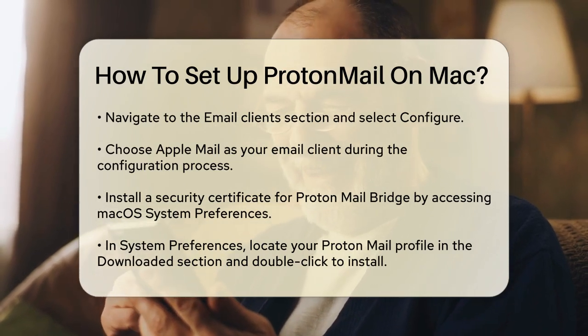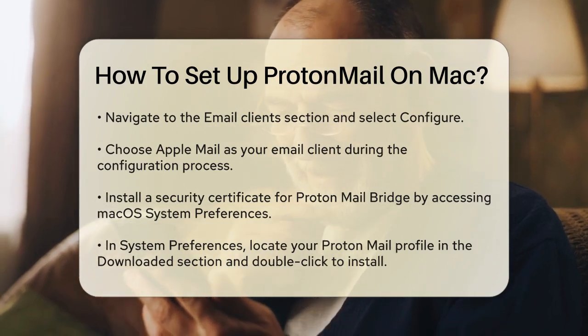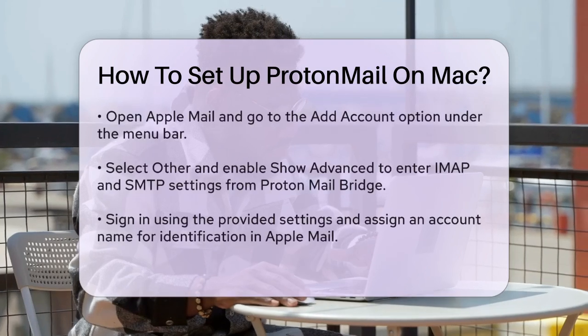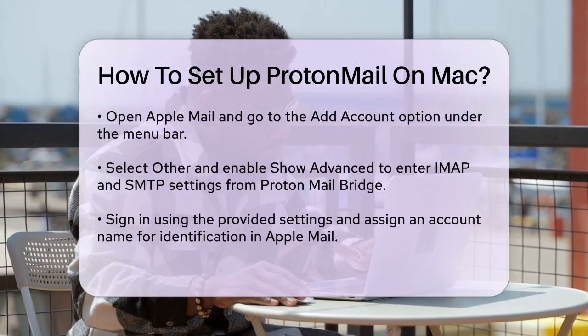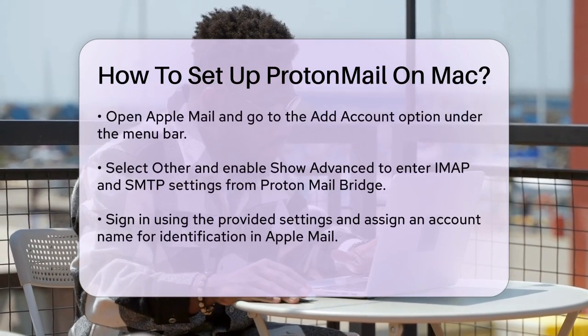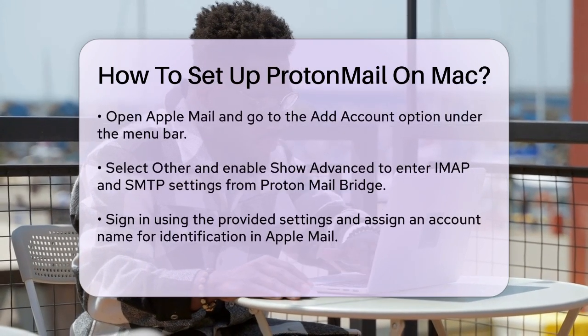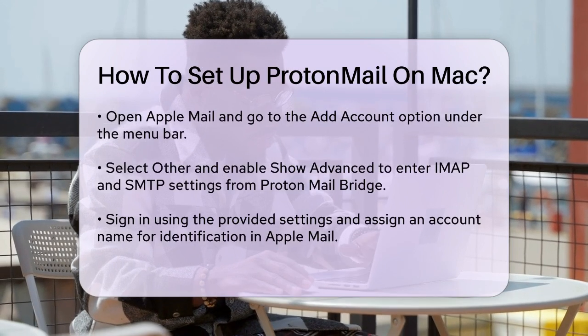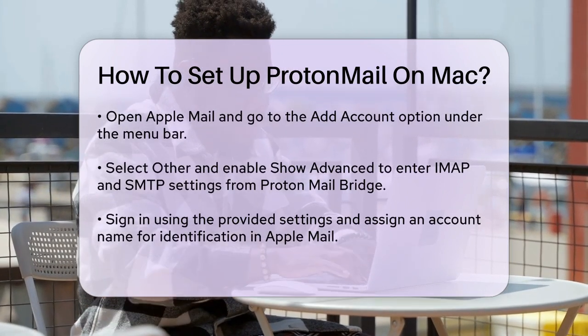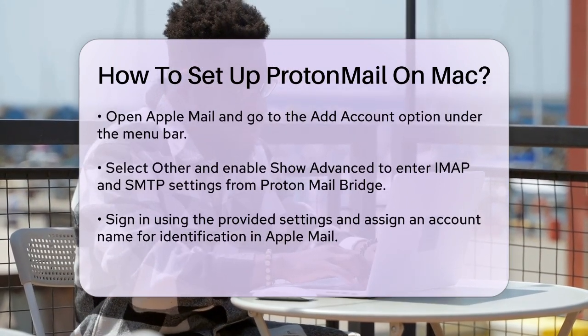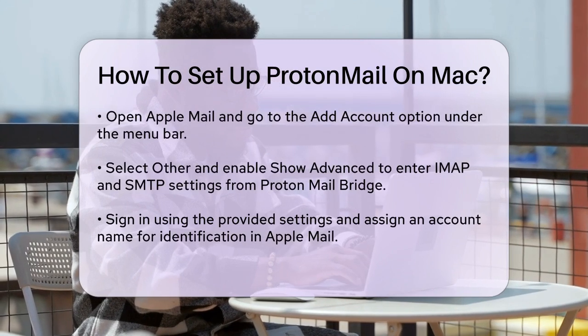Now open Apple Mail on your Mac. In the system menu bar, go to Apple Mail and select Add Account. Choose Other, and enable the Show Advanced option.